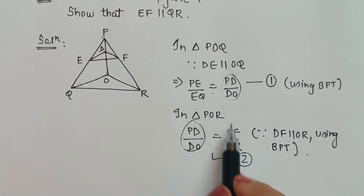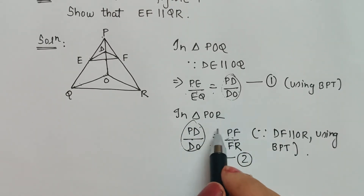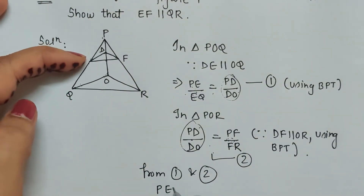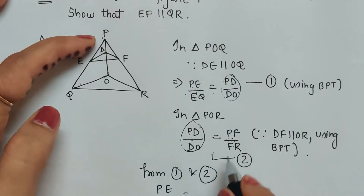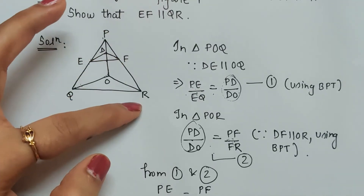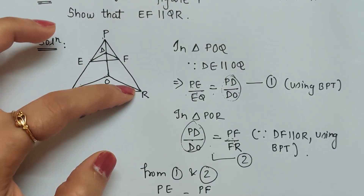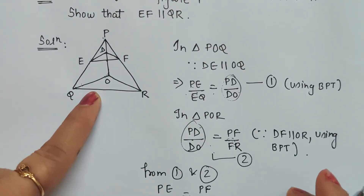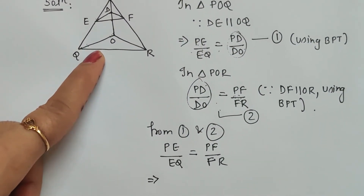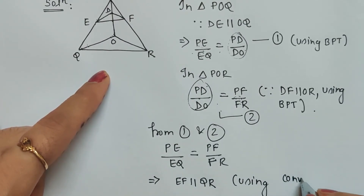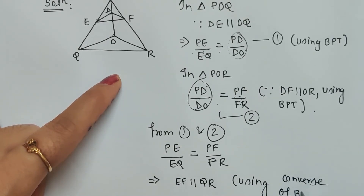From Equation 1 and Equation 2, we see that PD/DO appears in both. Since both PE/EQ and PF/FR are equal to PD/DO, we can equate them: PE by EQ is equal to PF by FR. This implies EF is parallel to QR, using the converse of basic proportionality theorem.